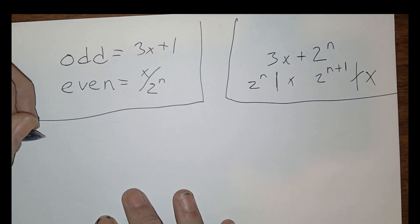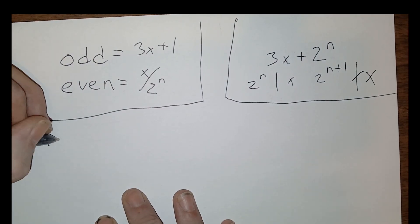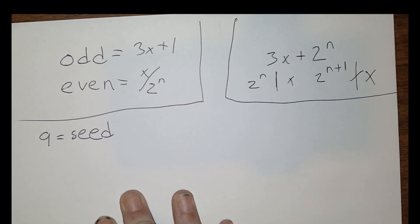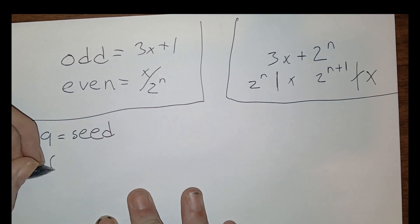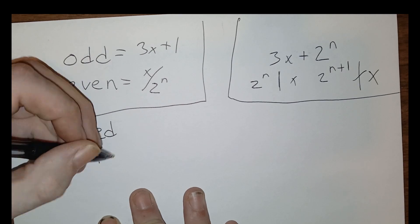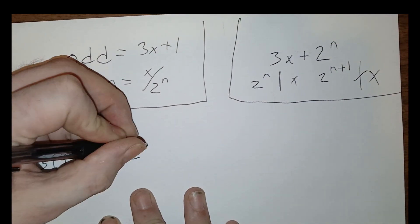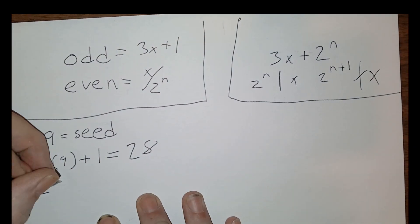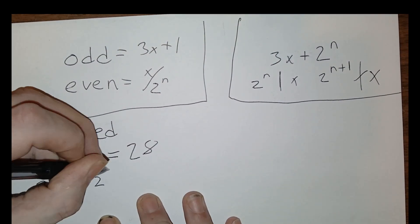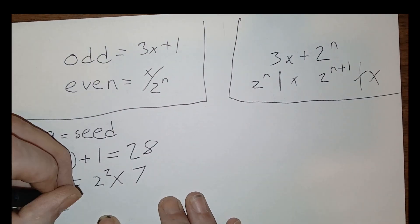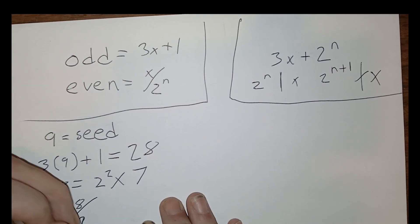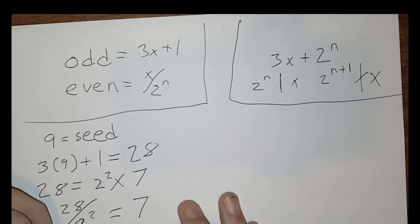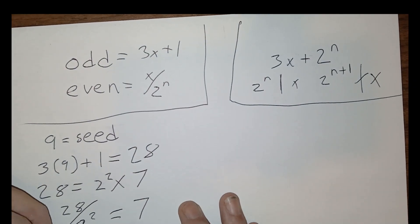To begin, we select a seed. For this demonstration, I'll use 9. Since 9 is odd, we multiply it by 3 and add 1, which brings us to 28. Visualizing 28 as its prime factorization, we see that it's equal to 2 to the power of 2 multiplied by 7. Since the largest prime power of 2 that divides 28 is 2², we know there would be 2 halving steps to divide 28 down to 7.